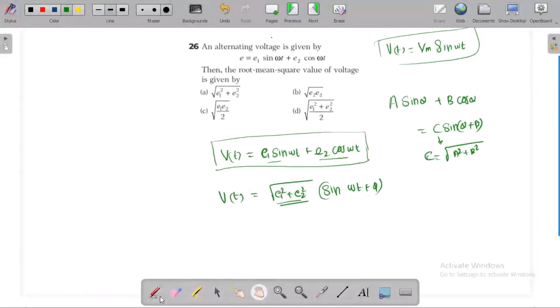We need the root mean square value of the voltage, so Vrms equals the maximum voltage Vm divided by root 2, which equals root of E1 squared plus E2 squared divided by root 2.